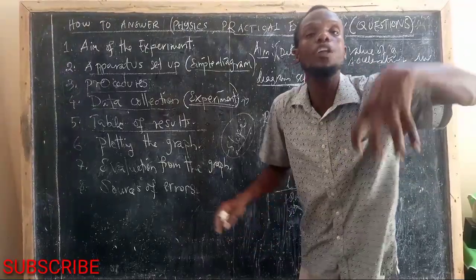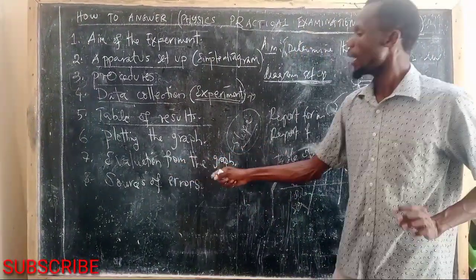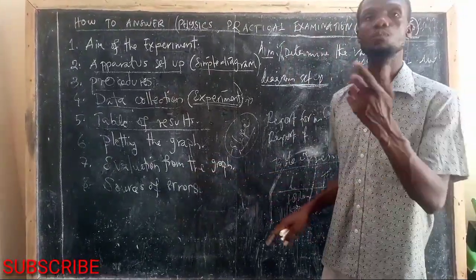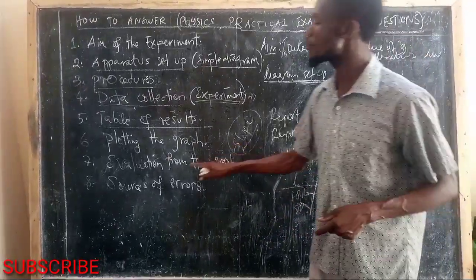It is where you can obtain what is missing. And then next thing, you have to evaluate something from the graph. Means you use the graph to determine what is missing or what is required. Example, a slope is determined from the graph.